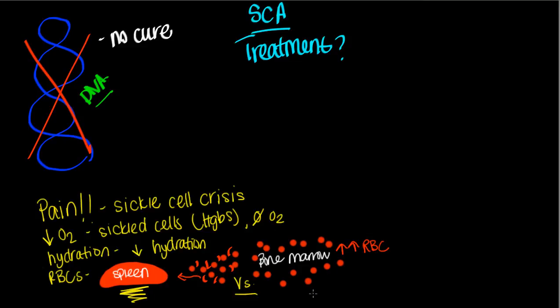Since we're destroying more red blood cells than we're replacing, we may need to artificially replace them. So let's look at each issue individually.